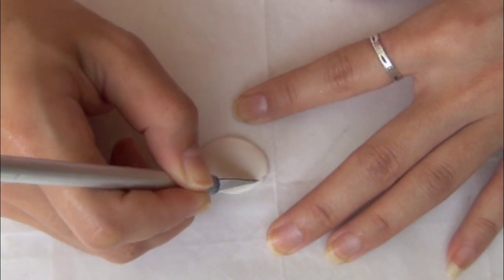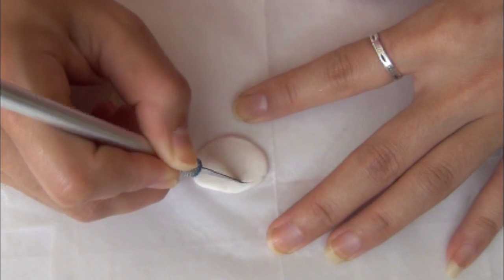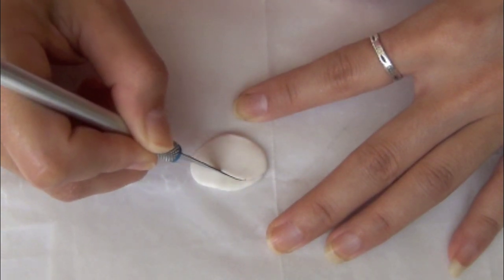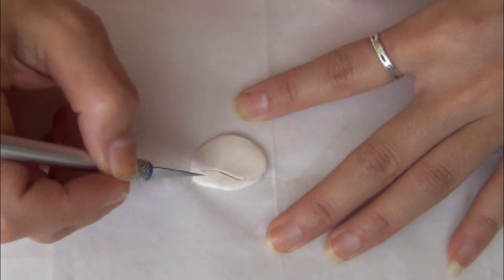First, you do a gentle curve. Be sure the first part is bigger than the tail. It kinda looks like an elongated S shape.